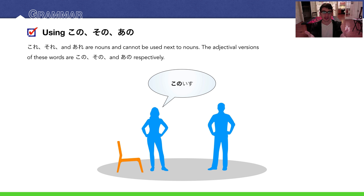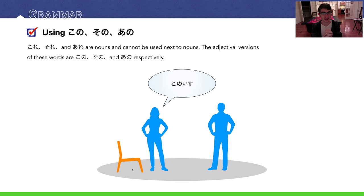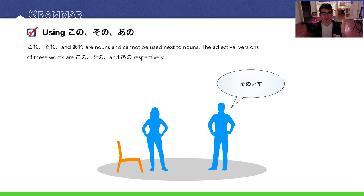They end in 'no,' and usually 'no' is a possessive particle that links two nouns together, which is why it works here in kono, sono, and ano. We have these two people — you'll probably recognize this from a previous lecture. The word for chair is isu. If the lady in blue wanted to say 'this chair,' she would say 'kono isu.' The guy could say 'sono isu' — that chair right there. If either of them wanted to mention a chair far away, they could say 'ano isu.'